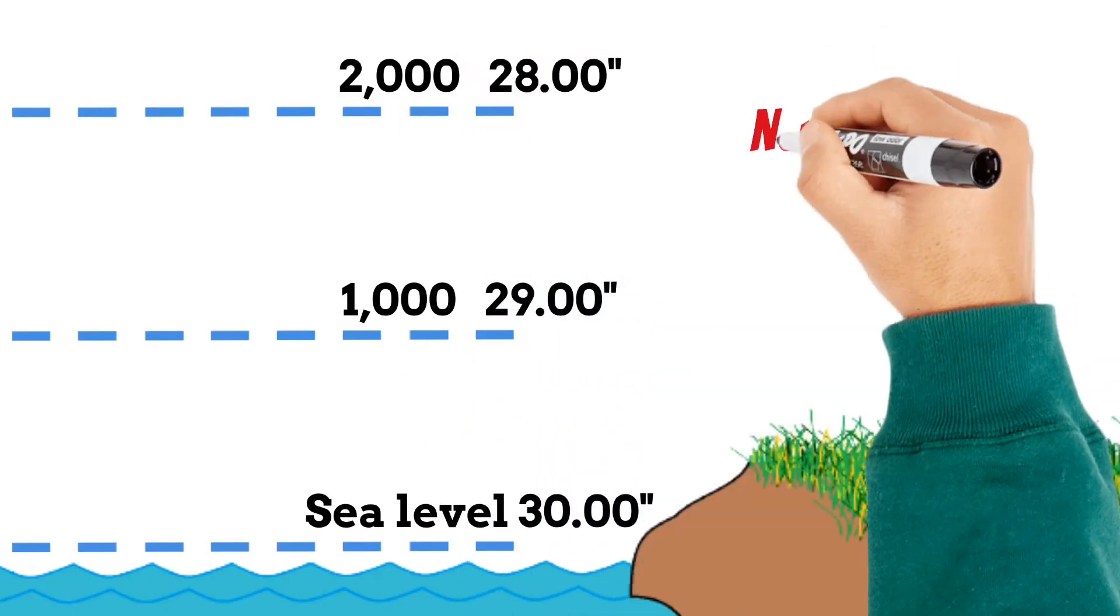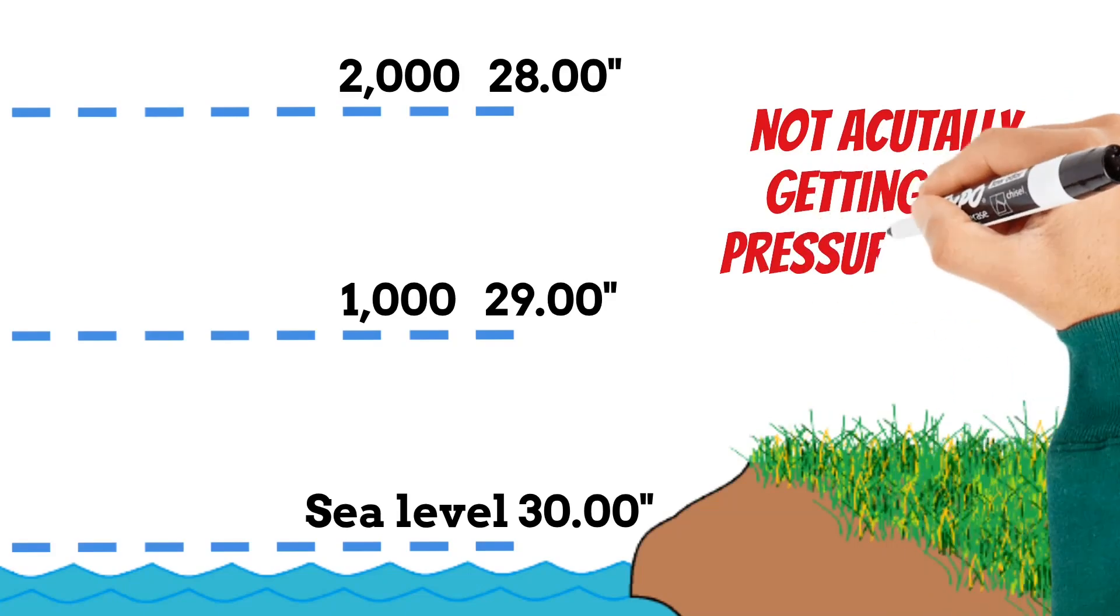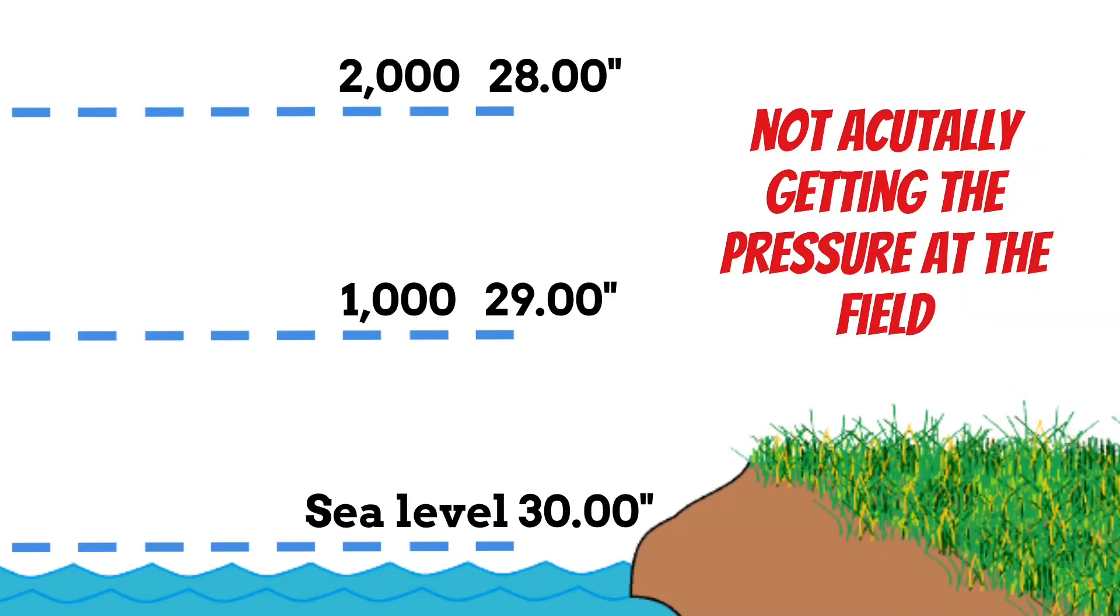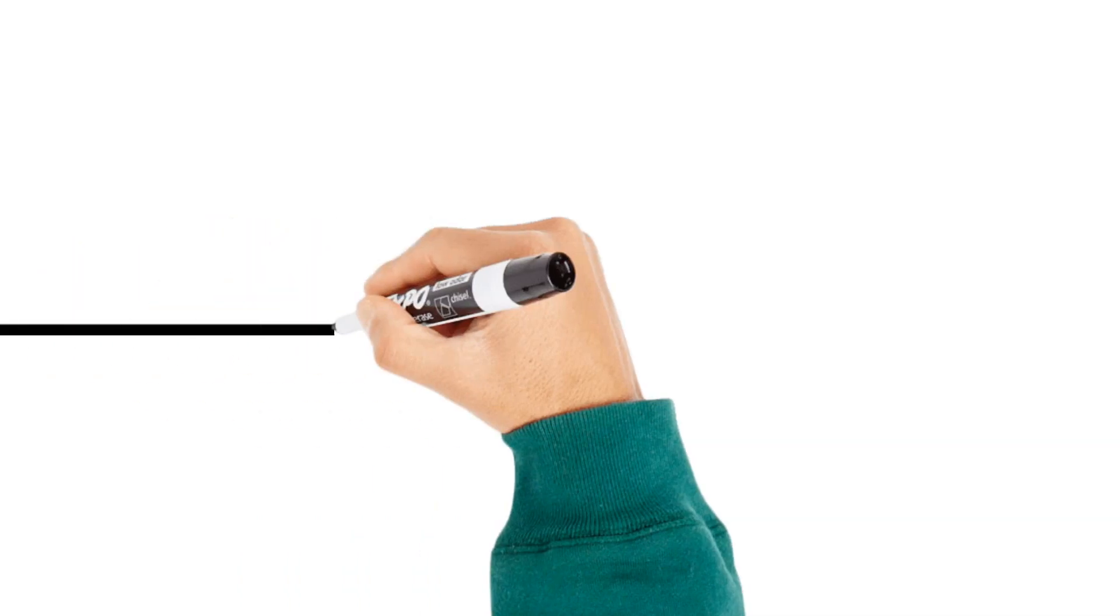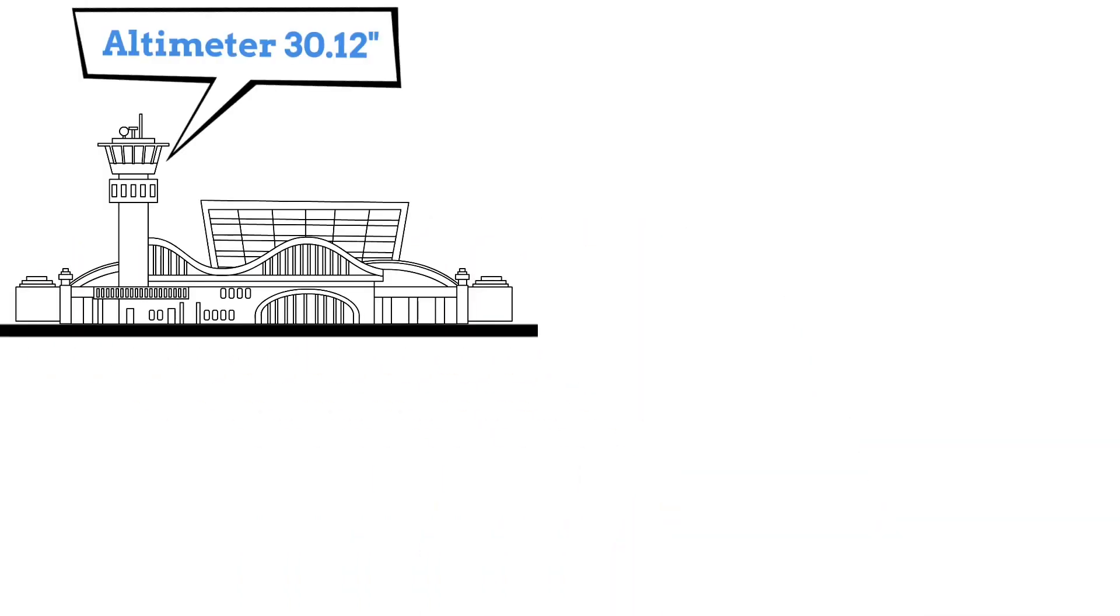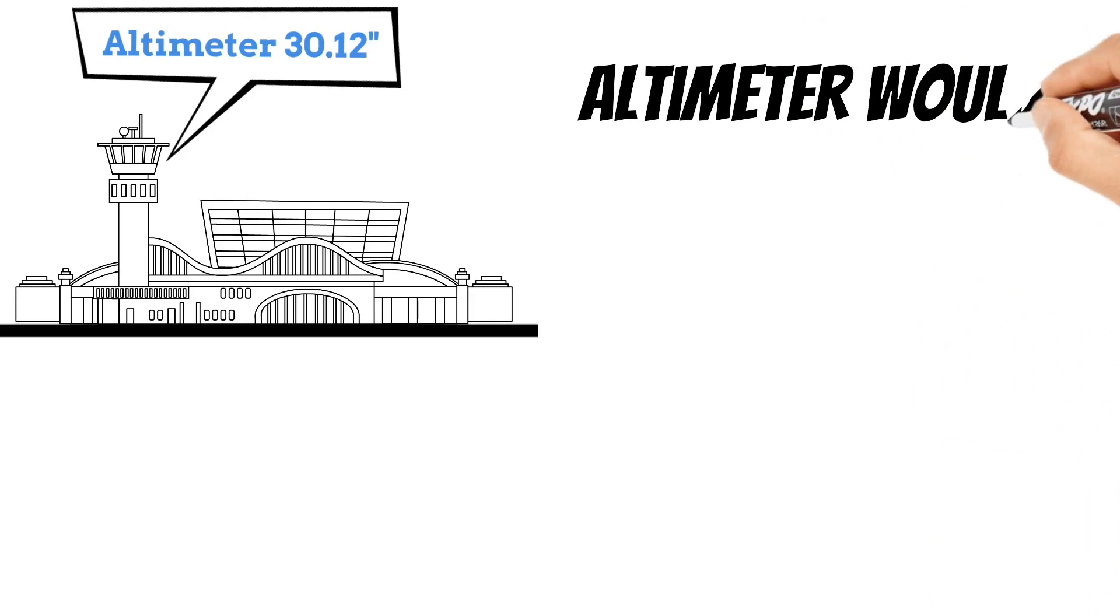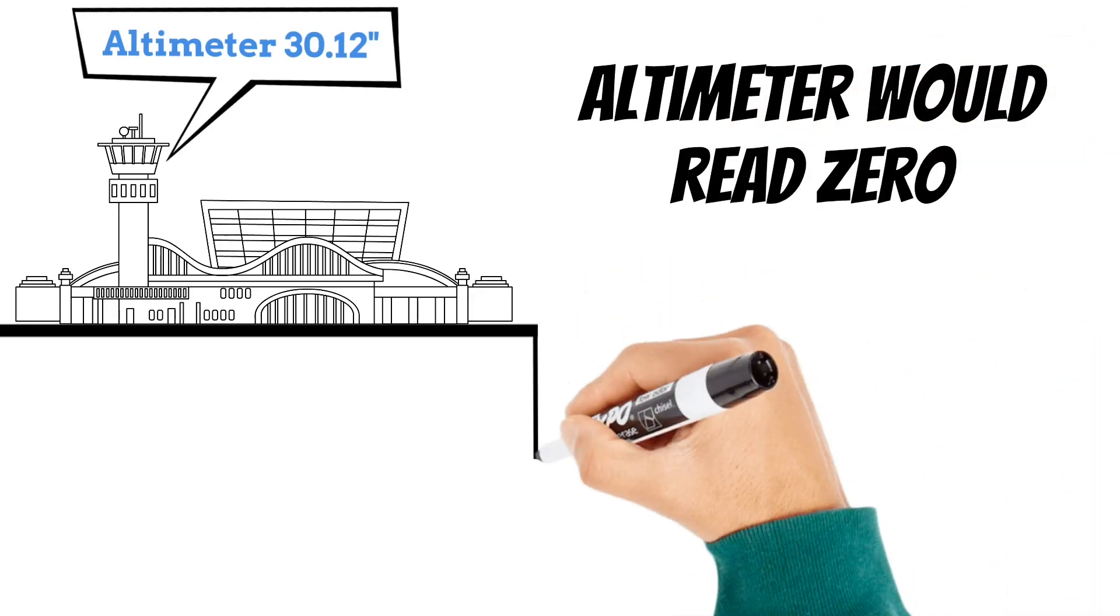But when you get the pressure reading from ATC or some other official aviation weather source, you're not actually getting the pressure reading at the field. If this were the pressure reading at the field, and you were to put that in your Kollsman window, your altimeter would actually read zero. And that's because these pressure readings are corrected for elevation.